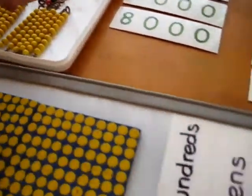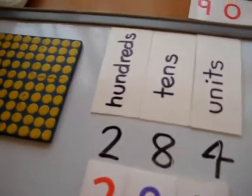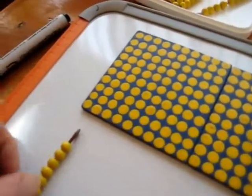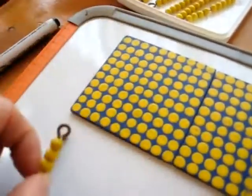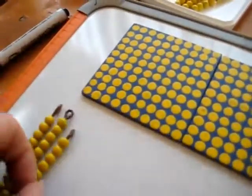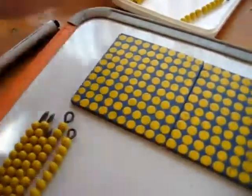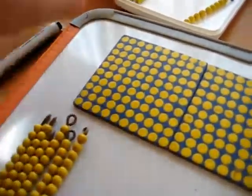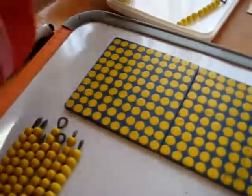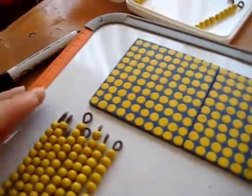And how many tens do we need? 8 tens. So he's going to count 8 tens. One ten is 10, two tens is 20, 30, 40, 50, 60, 70, 80.